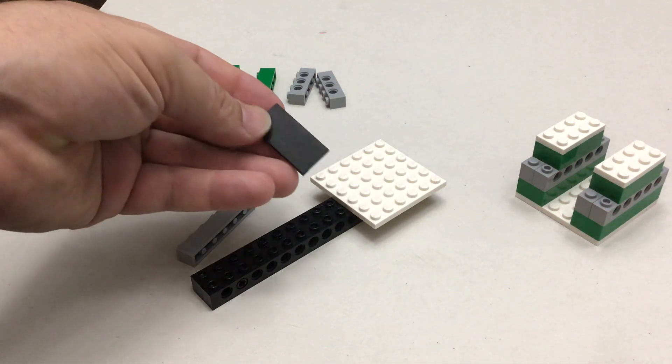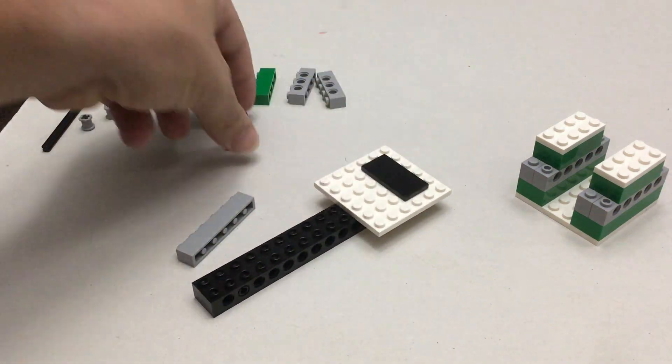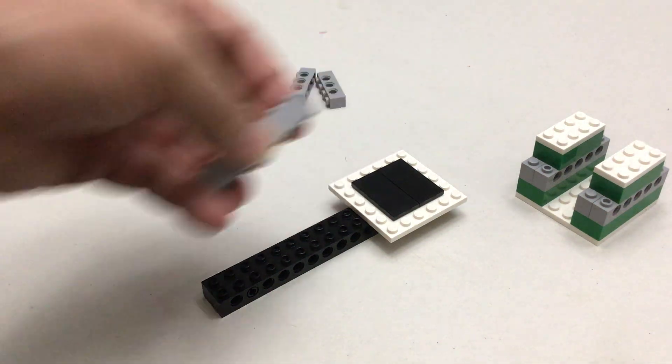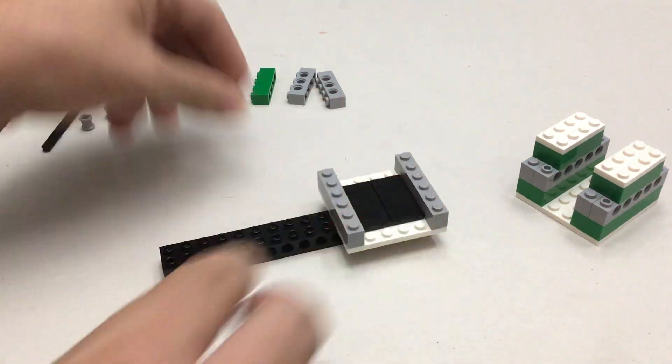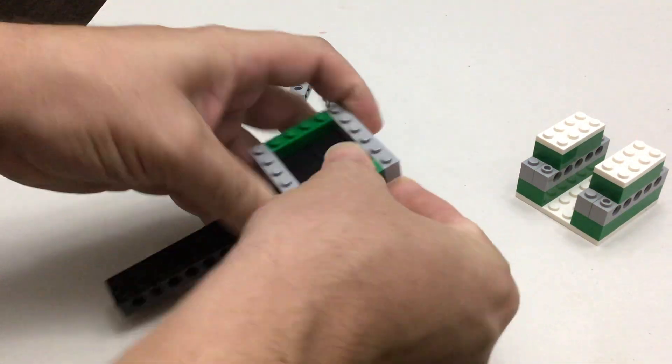Then we're going to add our tiles. These are our flat tiles, they're smooth on top. Those just go in the middle. Then we're going to build a little wall around. So let's go ahead and we'll add our 1x6 and our 1x4 bricks.